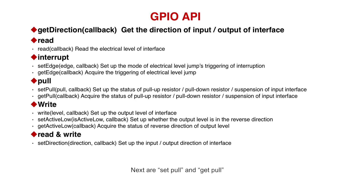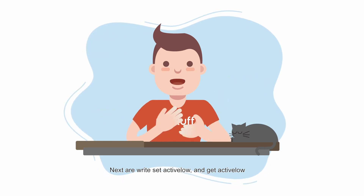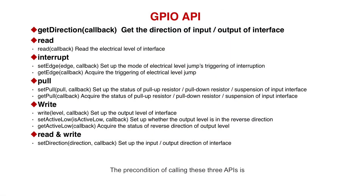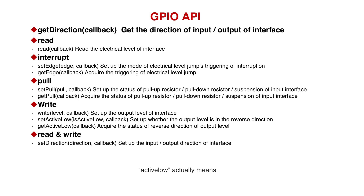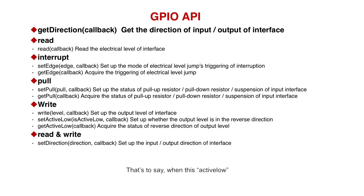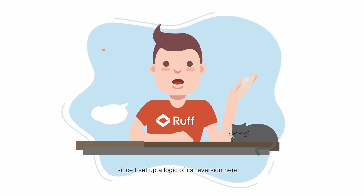Next are setPull and getPull. Similarly, the interface must have the pull capacity so that it can call these two APIs. Next are write, setActiveLoad, and getActiveLoad — these three APIs require the write capacity. The write API sets whether the external output level is high or low. ActiveLoad means whether a reversion is needed when outputting an electrical level — that is, when activeLow is set to true, if I externally output a high level, the final output is a low level, since a logic of inversion has been set up.